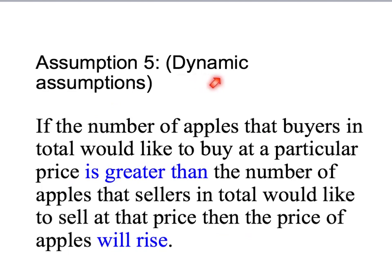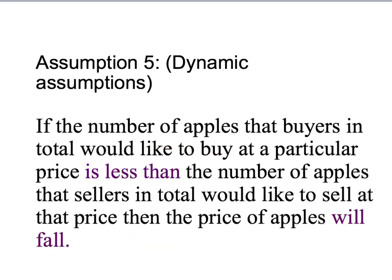Assumption five I'm going to call our dynamic assumptions. It has two parts. The first part is that if the number of apples that buyers in total would like to buy at a particular price is greater than the number that sellers in total would like to sell at that price, then the price of apples will rise. Similarly, if the amount that people would like to buy is less than the amount people would like to sell at that price, then the price of apples is going to fall.